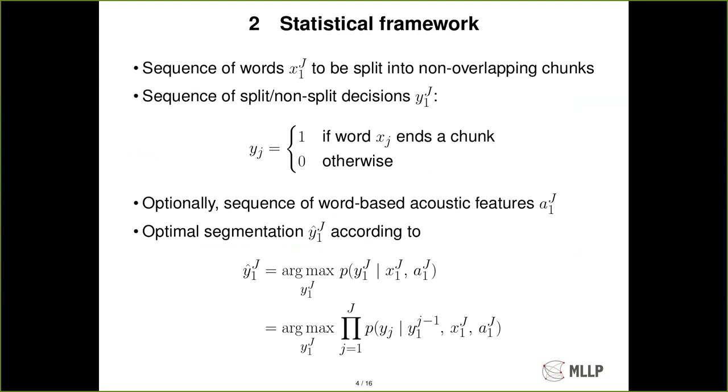For this work we are going to use this statistical framework. So we have an ASR input, a sequence of words x1 to j that are to be split into non-overlapping chunks, and then we will decide on a sequence of split/non-split decisions y1 to j so that yj is equal to 1 if the word xj ends a chunk and 0 otherwise. And optionally we will get a sequence of word-based acoustic features a1 to j which are aligned with the input words. So aj is aligned to xj.